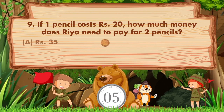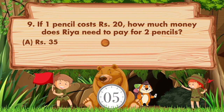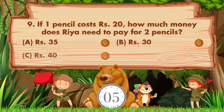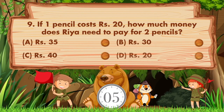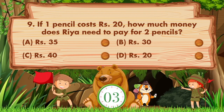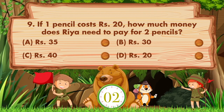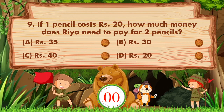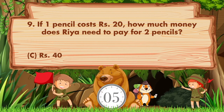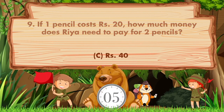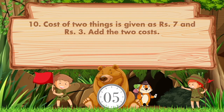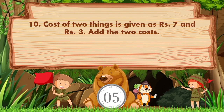Option a is 35 rupees, option b is 30 rupees, option c is 40 rupees, option d is 20 rupees. The answer is option c: 40 rupees.